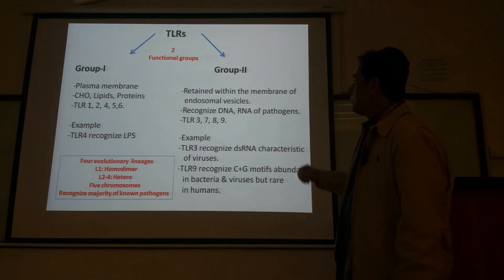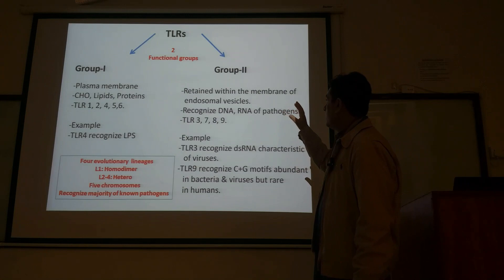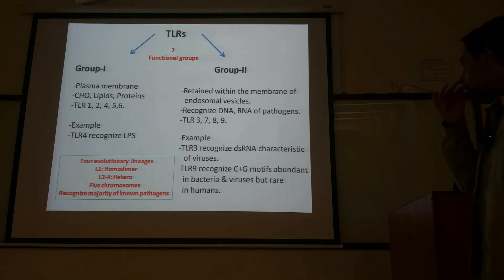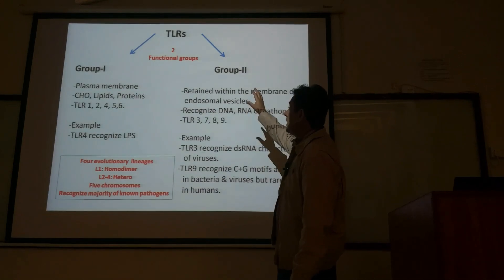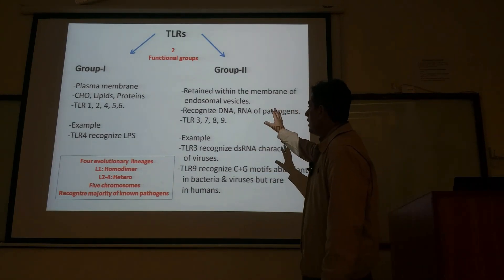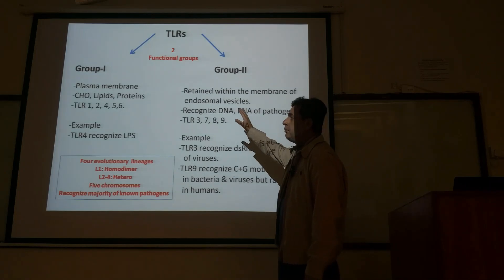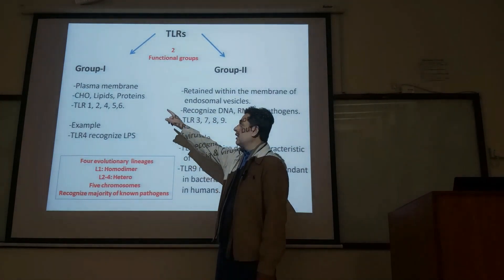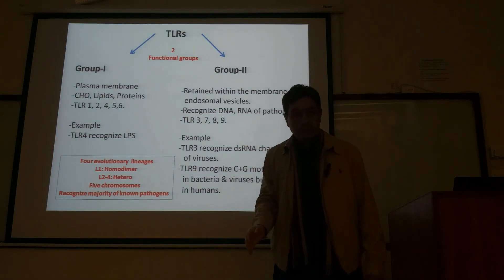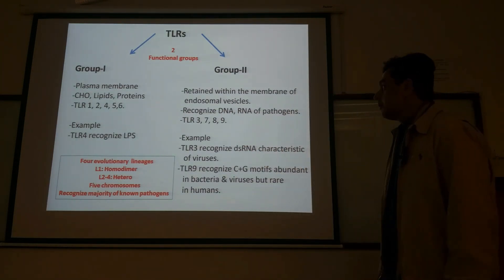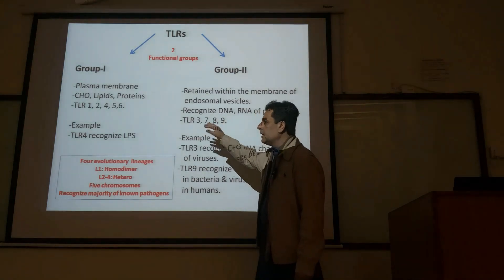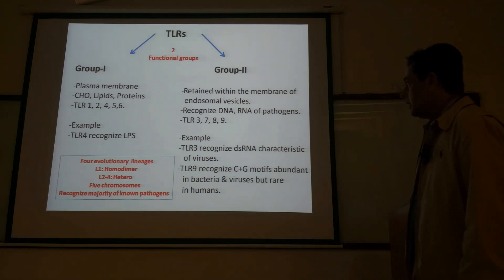Group two toll-like receptors are retained within the membrane of endosomal vesicles — they are present inside the cell. While group one receptors recognize carbohydrates, lipids, and proteins, group two receptors recognize DNA and RNA of pathogens — the nucleic acids of pathogens. Group two includes TLR3, 7, 8, and 9.